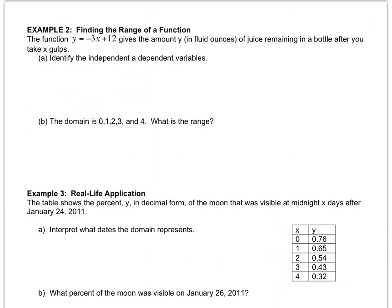The function y equals negative 3x plus 12 gives the amount y of juice remaining in a bottle after you take x gulps. Identify the independent and the dependent variable. So which one depends on the other? Does the fluid ounces determine how many gulps you take or does the number of gulps determine how many fluid ounces are left?